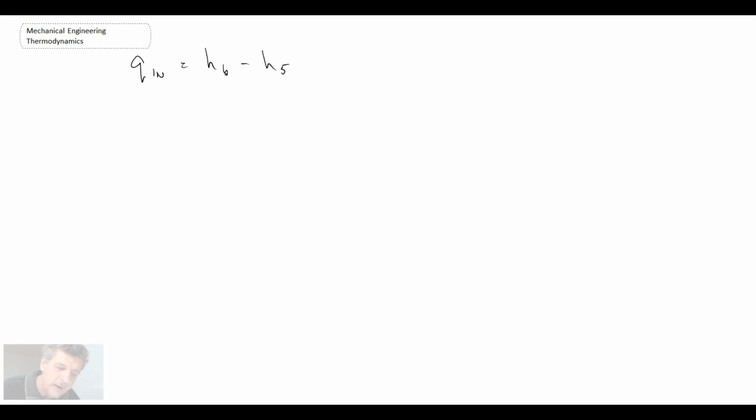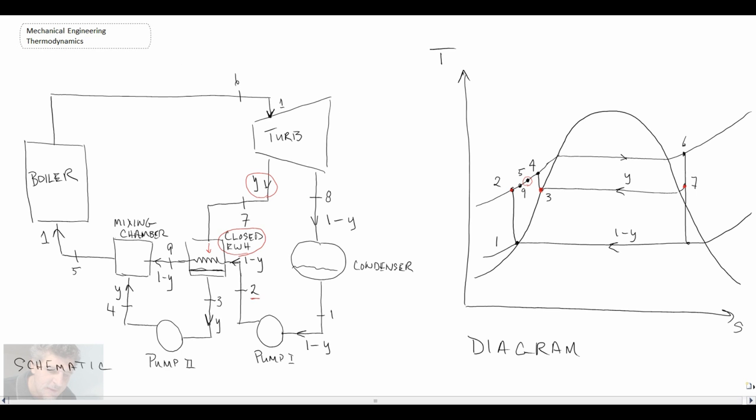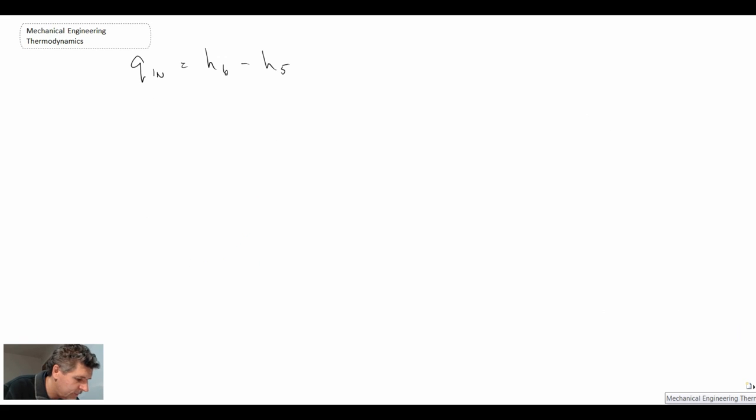So Q_in, like before, is H6 minus H5, so it's basically the change in enthalpy across the boiler. Q_out, now we need to be careful here because we don't have 100% of the mass flowing through the condensing unit. And that's why we have (1 - Y) for the mass fraction.